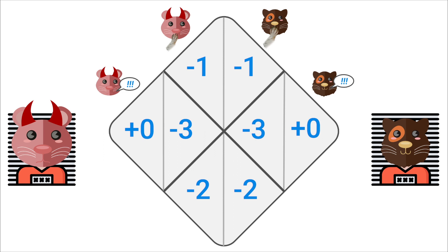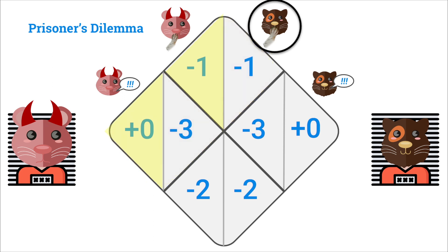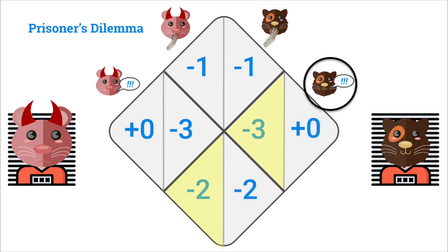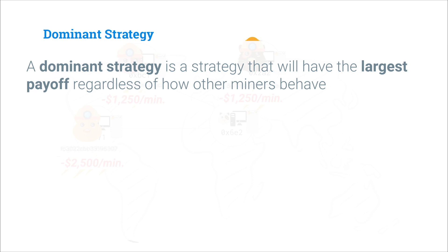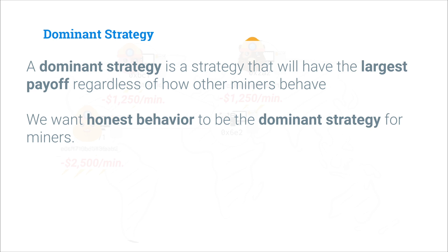We can model the payoffs from each scenario in a matrix. If Bob stays quiet, Mallory can stay quiet and spend a year in jail, or confess and spend no time in jail — so she confesses. If Bob confesses, Mallory can stay quiet and spend three years in jail, or confess and spend only two — so she confesses again. No matter whether Bob stays quiet or confesses, Mallory's best strategy is to confess. When a player has the same best strategy regardless of what other players do, this is called a dominant strategy. In a Bitcoin context, a dominant strategy gives the largest payoff regardless of how other miners are behaving, and we want honest behavior to be the dominant strategy for miners.